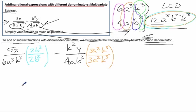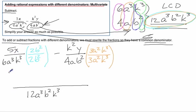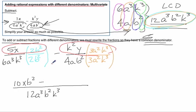So now we know we're going to have a common denominator. We can put this whole thing over 12a cubed b squared k cubed. Then we just multiply these numerators. That gives us 10xb squared. And over here, we have minus 3 times a squared y k to the fifth.